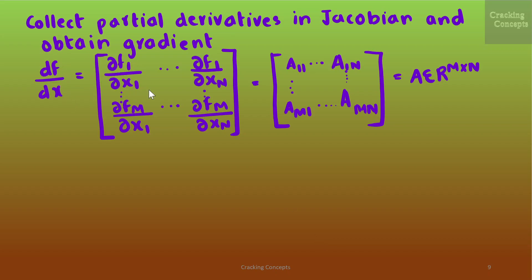Collecting these terms, df/dx is built by replacing each partial derivative entry with aij, giving the matrix with entries a11 through a1n and am1 through amn. This matrix belongs to ℝᵐˣⁿ, confirming that the gradient of f = Ax with respect to x is simply the matrix A.